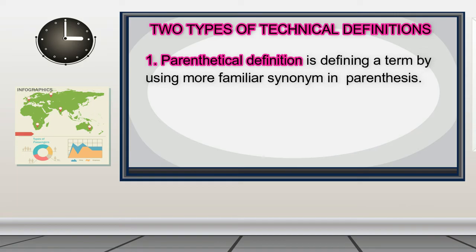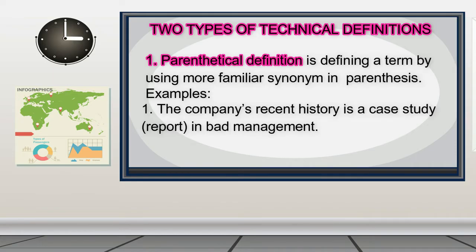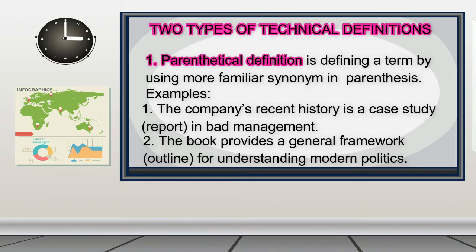Parenthetical definition is defining a term by using a more familiar synonym in parentheses. For example: 'The company's recent history is a case study (or report) in bad management.' 'The book provides a general framework (or outline) for understanding modern politics.'